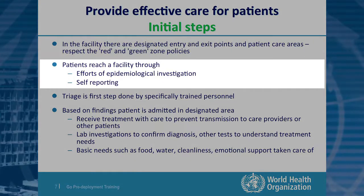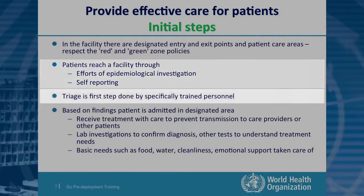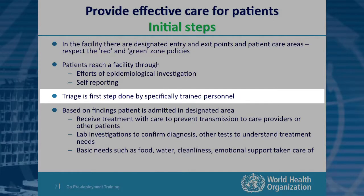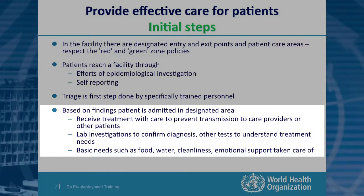Patients reach facilities through epidemiological investigation or self-reporting. The first step is triage, done specifically by trained personnel who listen to the patient's history, look at symptoms and signs, and carry out laboratory diagnosis. Based on findings, the patient is either admitted into a designated area or asked to take medication for another illness. They receive treatment with care to prevent transmission to care providers or other patients.